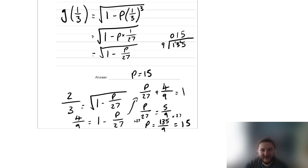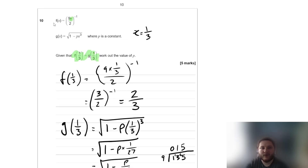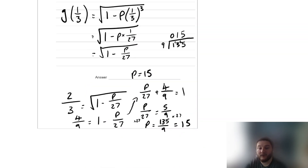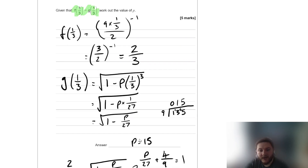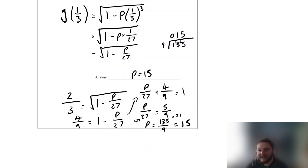What a great question — a long one testing whether you understand subbing into equations and can solve equations involving square roots, fractions, and negatives. To check, you could sub p equals 15 back into the original equations and verify that g of a third equals f of a third. But I'm happy that p equals 15.